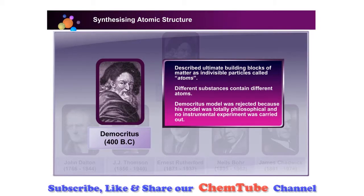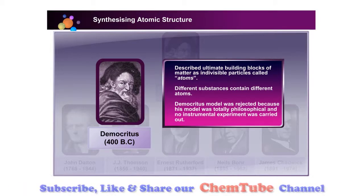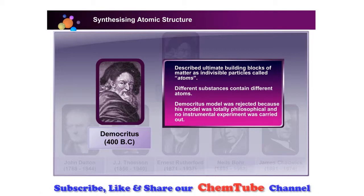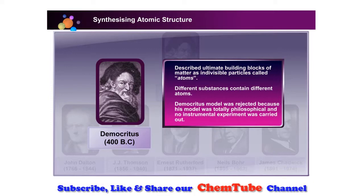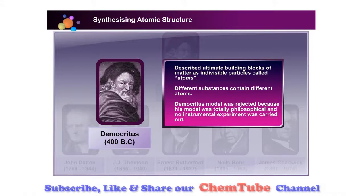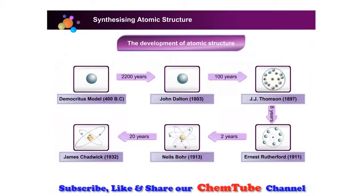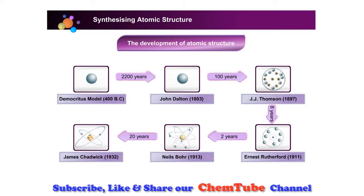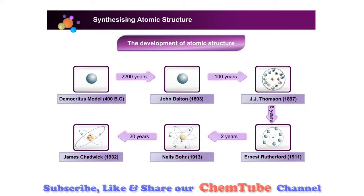Democritus's model, 400 BC, described the ultimate building blocks of matter as indivisible particles called atoms. Different substances contain different atoms. Democritus's model was rejected because his model was totally philosophical and no instrumental experiment was carried out.